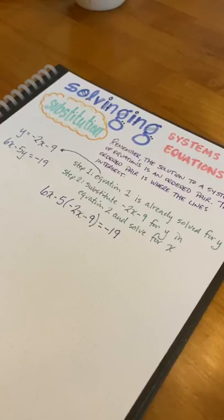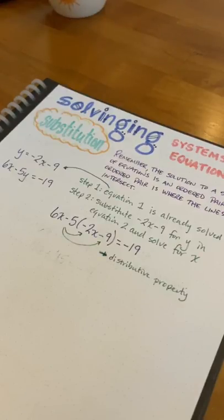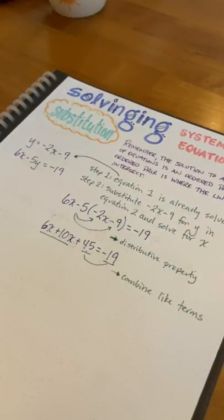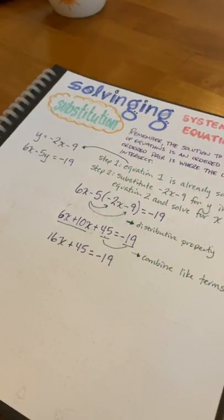Step 2, we're going to substitute negative 2x minus 9 for y in equation 2 and solve for x. Then we're going to use the distributive property and distribute the negative 5 to the items inside the parentheses.